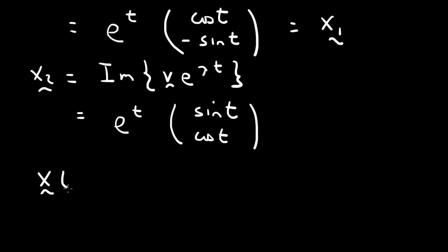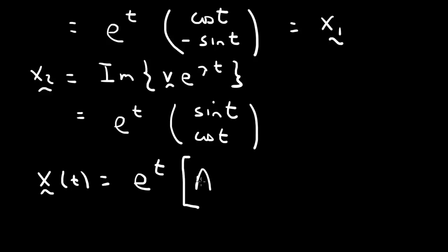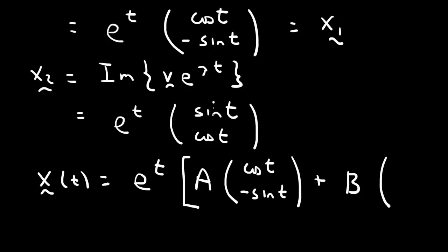Putting it together, the general solution is x(t) = e^t times (a·[cos t, -sin t]ᵀ plus b·[sin t, cos t]ᵀ), where a and b are arbitrary constants. That is the general solution of this system.